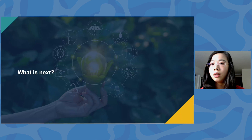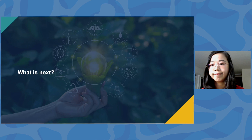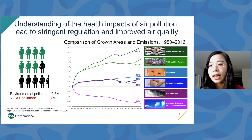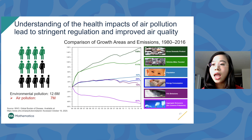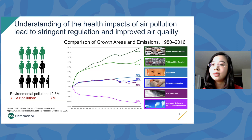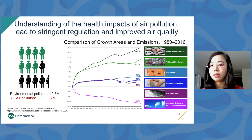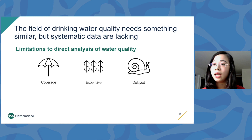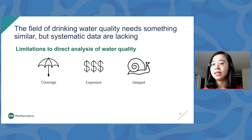So what is next in understanding the health impacts of drinking water quality? Over the past 30 years, the U.S. has made impressive improvements in air quality. As population and economy grew, air pollution levels continued to fall, thanks to a good understanding of health impacts. Researchers like Joe Schwartz and Doug Dockery at Harvard demonstrated that air pollution is linked to increased mortality, allowing organizations like the WHO and the Global Burden of Disease to estimate that around 7 million people die every year from air pollution exposure. Better understanding the link between drinking water quality and health would help tremendously with more stringent drinking water rules.